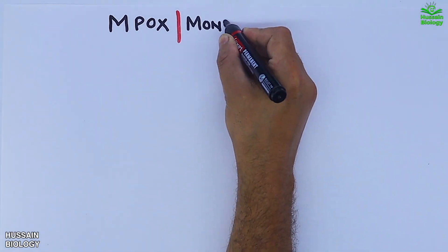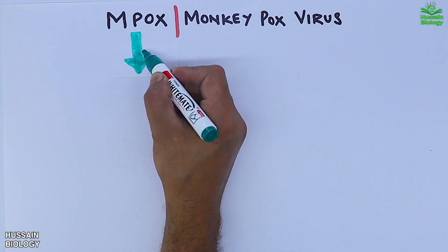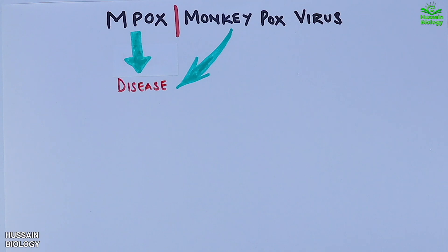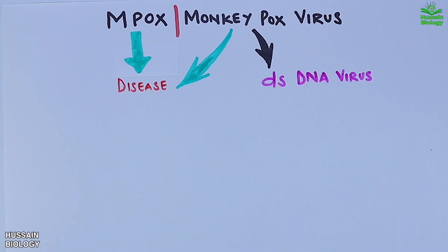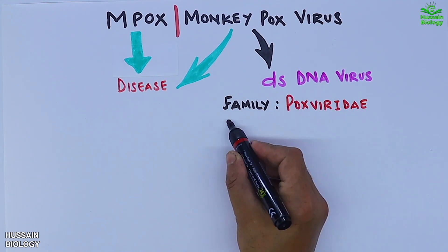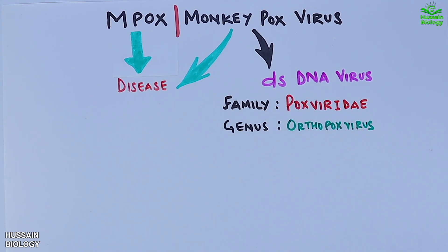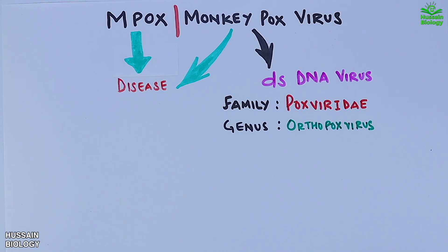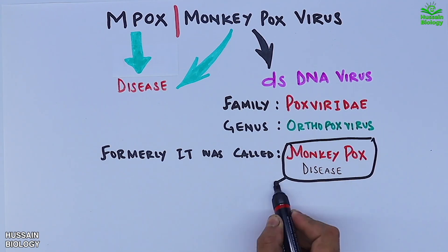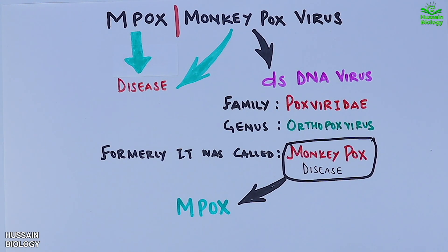In this video we'll be discussing mpox and the monkeypox virus. Mpox is a disease caused by the monkeypox virus, which is a double-stranded DNA virus from the family Poxviridae, genus Orthopoxvirus. In this diagram we can see the monkeypox virus size and structure in comparison to HIV, SARS-CoV-2, and poliovirus. Formerly it was called monkeypox disease, but now it's termed mpox disease.